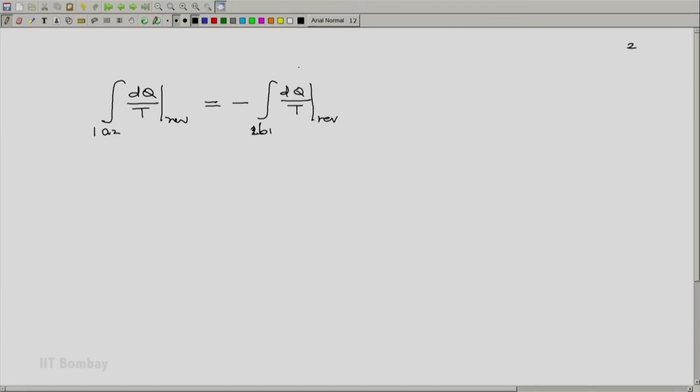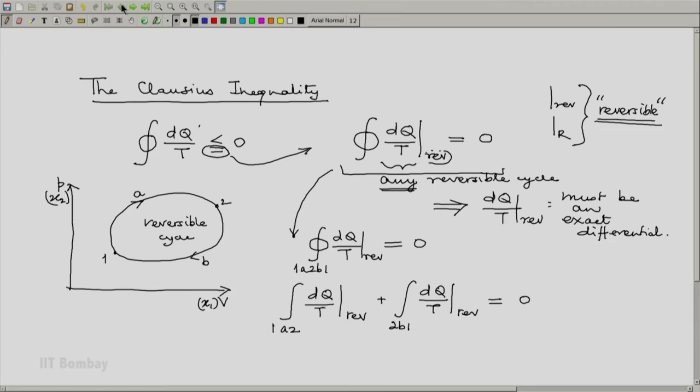Now we notice going back to the sketch, the process 2b1 being part of a reversible cycle is a reversible process. So now if I execute it in reverse as 1b2, I am going to retrace the same path but all my interactions are going to be reversed or going to be inverted. Whatever was dq will become minus dq and so on.